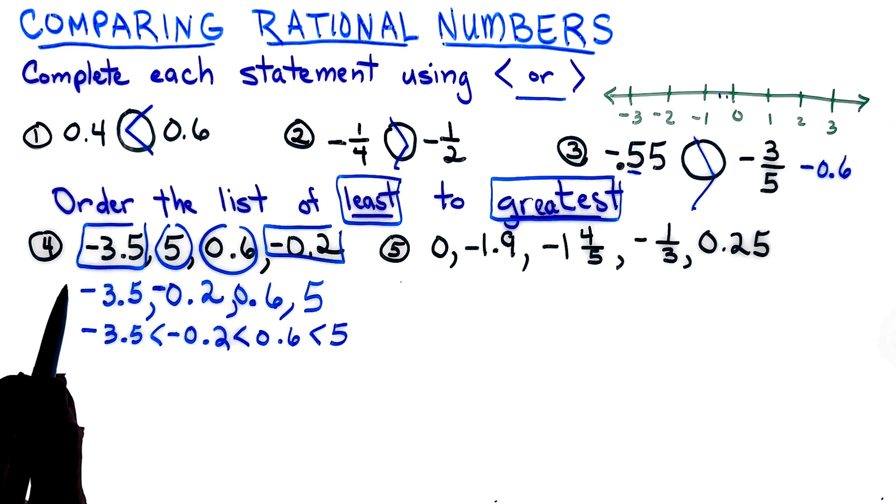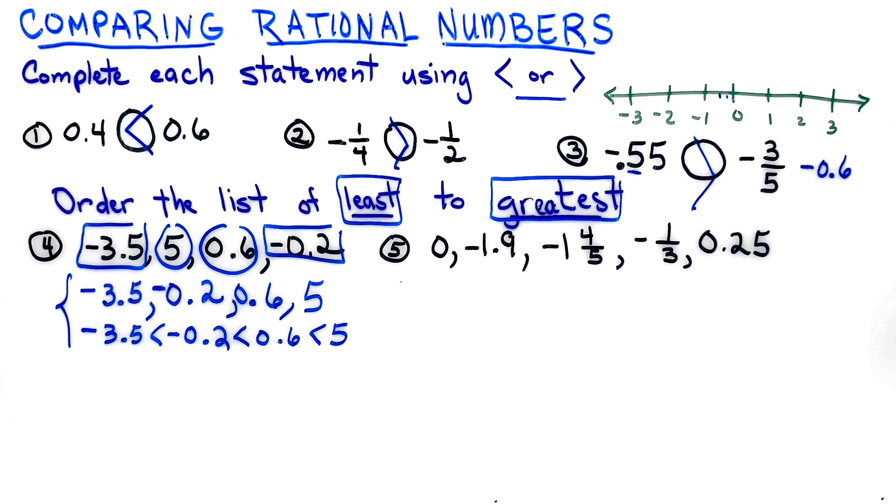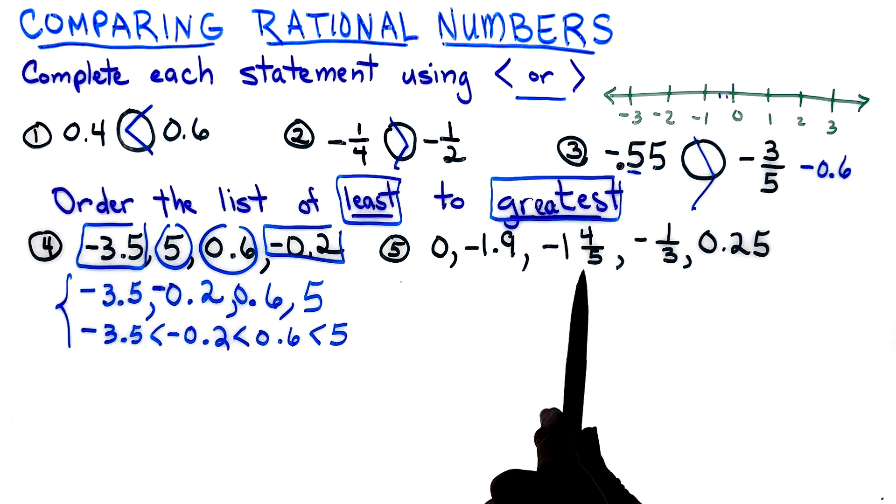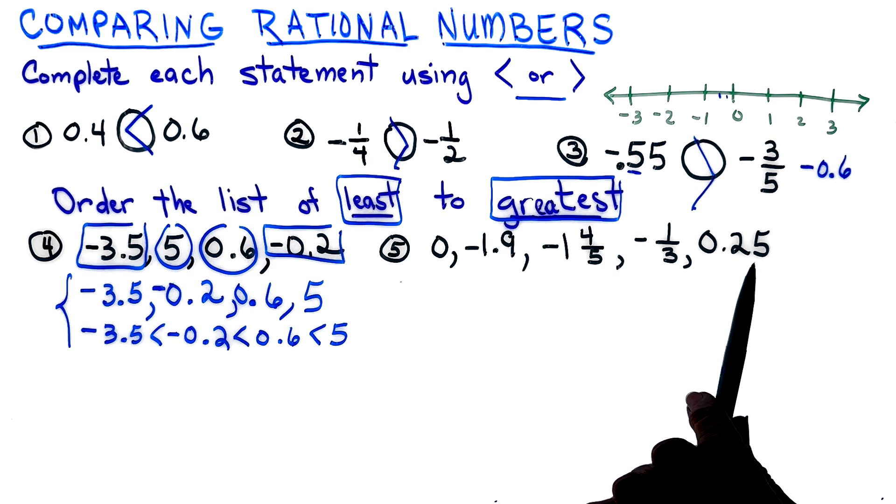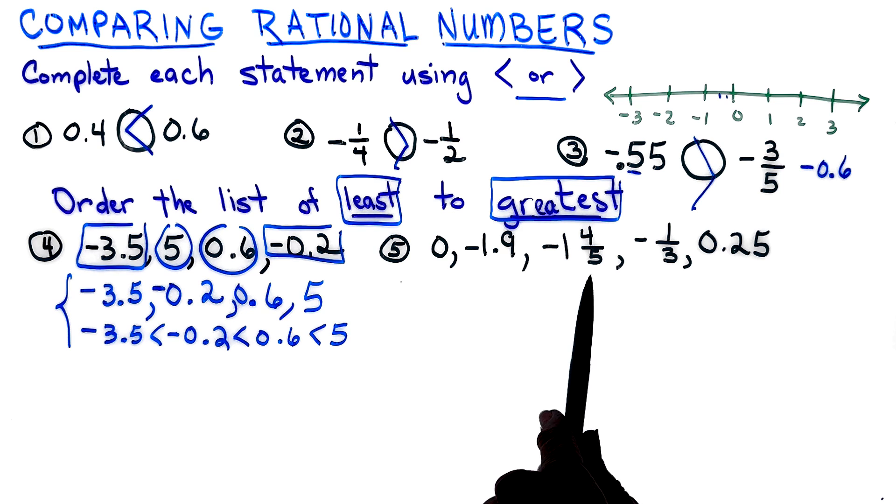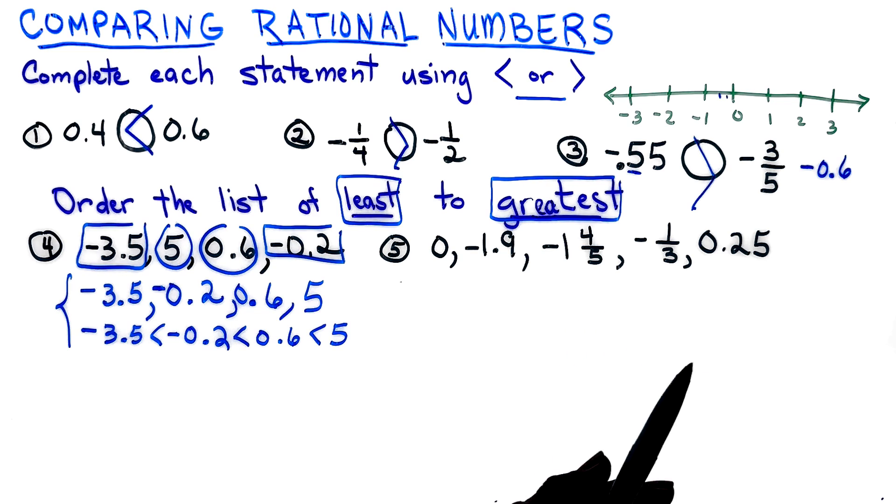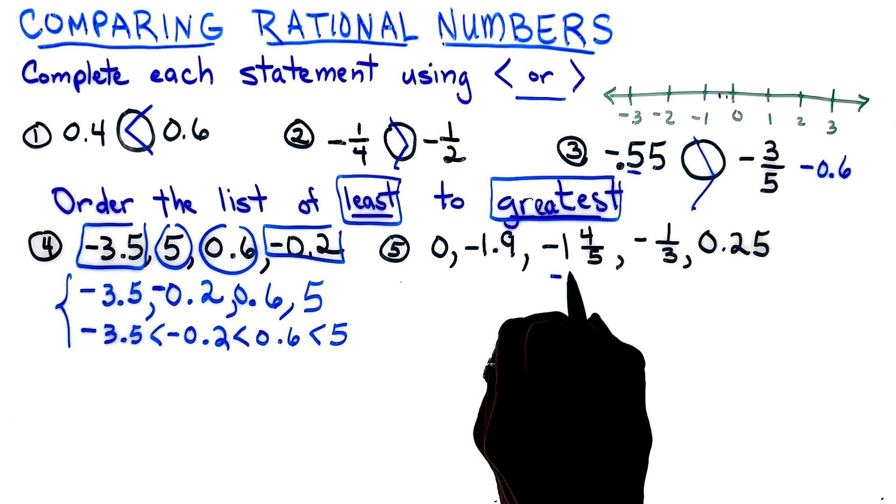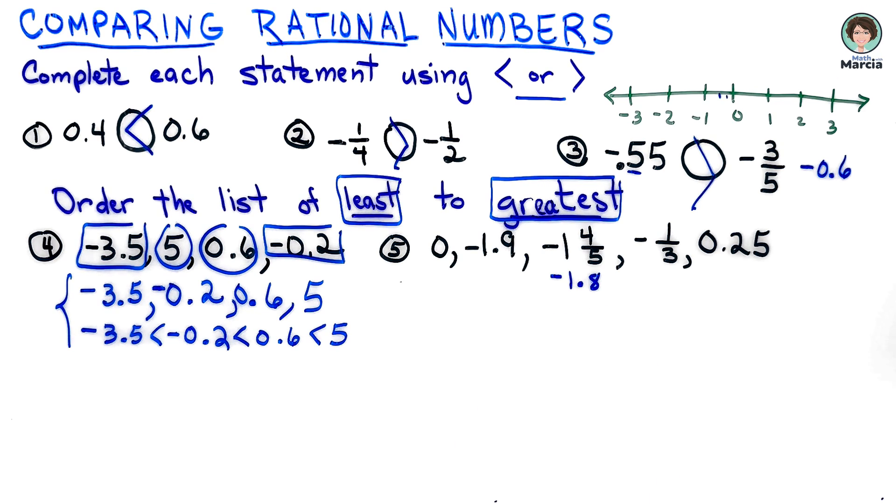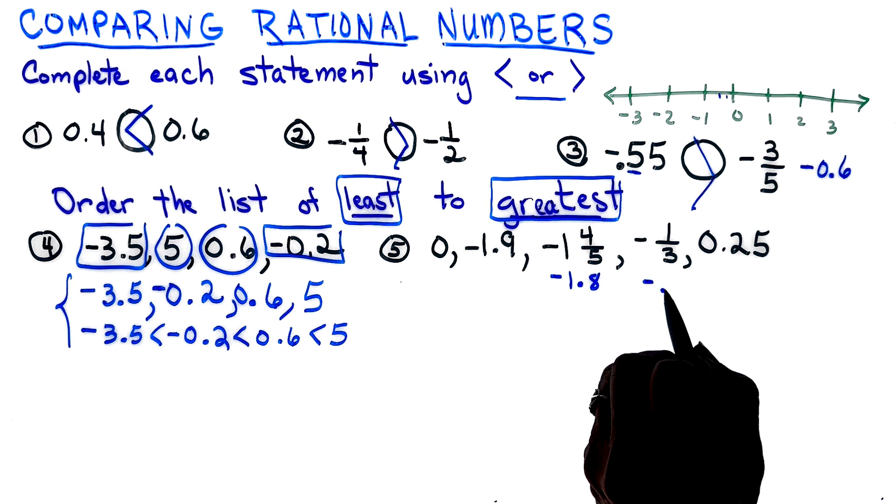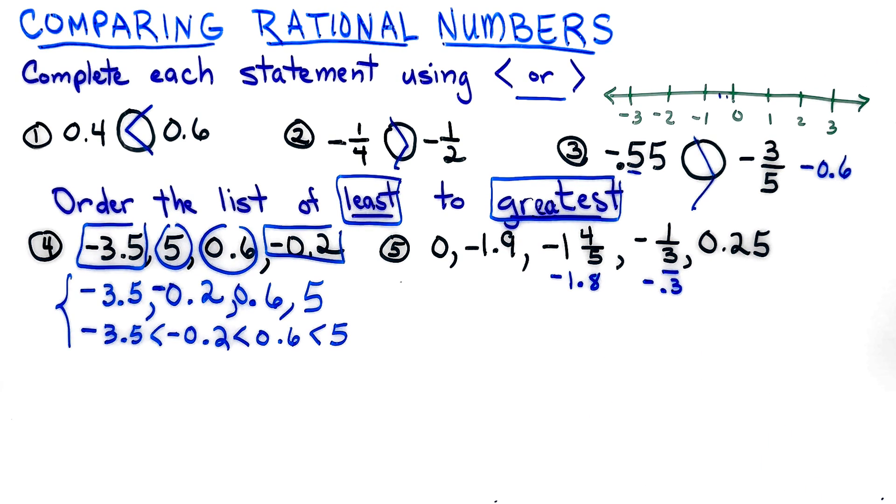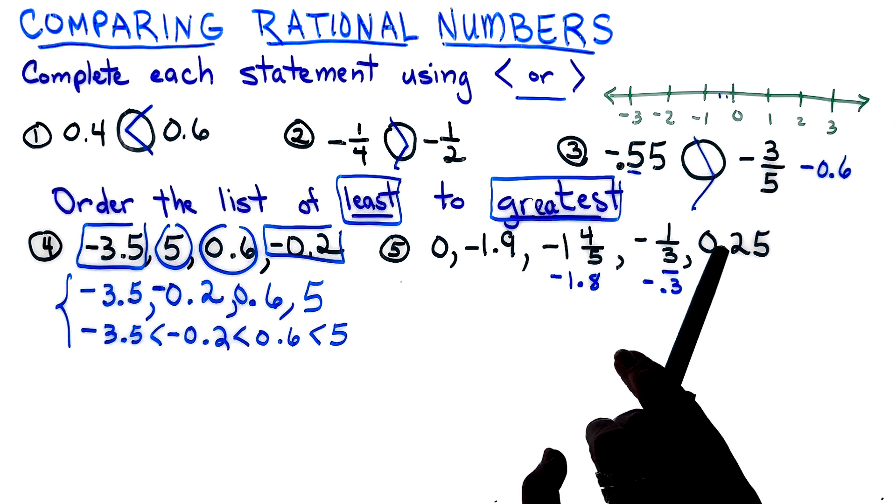Looking at number five, I see that I have a zero, a negative, a decimal, and a fraction. I know that my life will be much easier if everything is in decimal form. When we write our answer we're still going to use the numbers that they give us, but I am going to change this negative one and four-fifths. I know that's the same as negative one and eight tenths. When I am looking at my negative one-third, that's a repeating decimal, so I'm just going to write it as a negative and it's three tenths repeating.